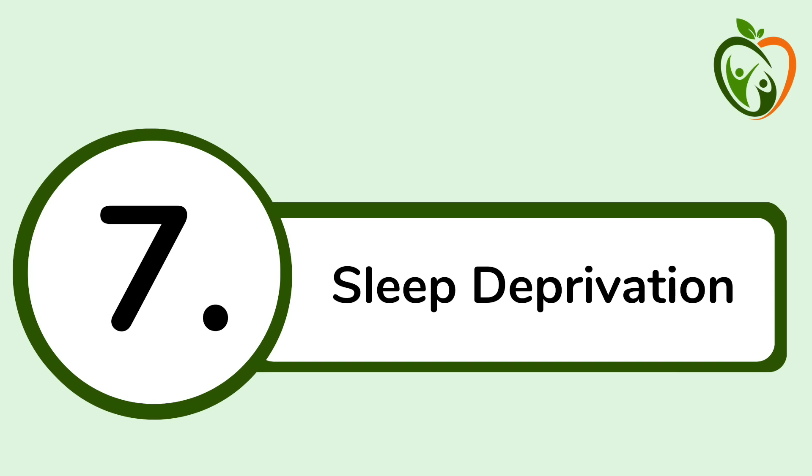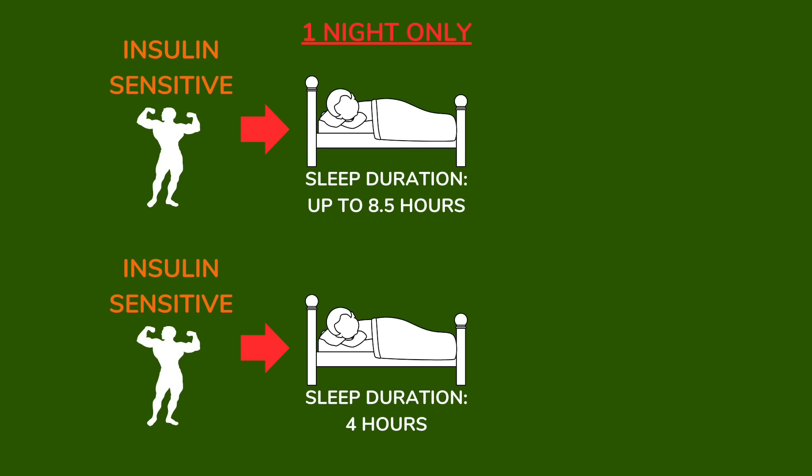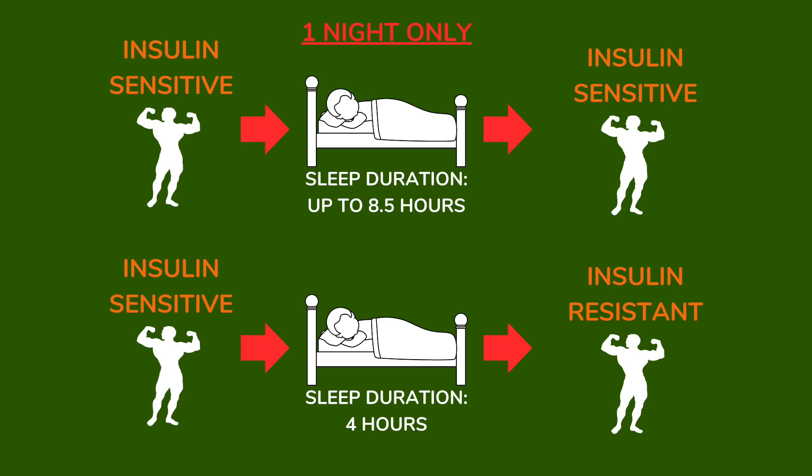Potential cause number seven: sleep deprivation. We have compelling data that as little as a single night of insufficient sleep measurably reduces insulin sensitivity. In one study, participants allowed to sleep only four hours showed a 25% reduction in insulin sensitivity measured by the gold-standard clamp. In another study, five hours of sleep per night for one week reduced insulin sensitivity by 20% compared to normal sleep. Sleep deprivation increases cortisol levels, and one study demonstrated that artificially keeping cortisol levels low partially blocked the insulin-resistance-stimulating effect of sleep deprivation, suggesting cortisol is at least partly responsible.